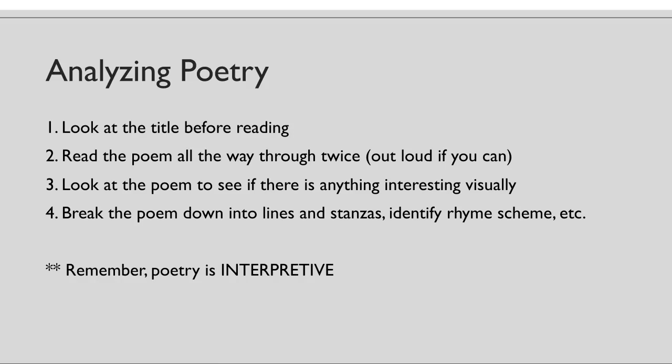Number two: read the poem all the way through twice, and ideally you should read the poem out loud. Just like music — if you just read lyrics on a page, it doesn't have the same effect as listening to a song out loud. Poems are lyrical, like music, so you should read them out loud as much as you can. Then look at the poem to see if there's anything interesting visually related to the content — a lot of poets, especially in the 1920s, include visual elements in their poems. After you've done all of that, you can start breaking the poem down into chunks, into lines and stanzas, looking at the rhyme scheme, etc. But through all of this, remember that poetry is interpretive — what you get out of a poem might be different from what someone else gets.